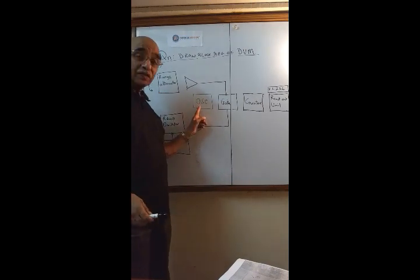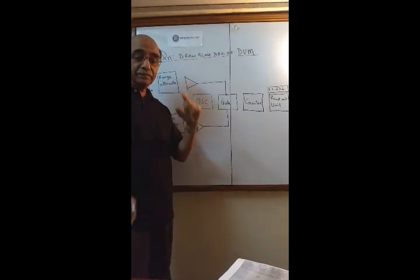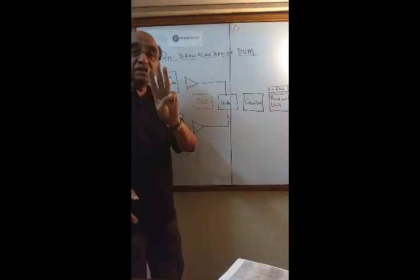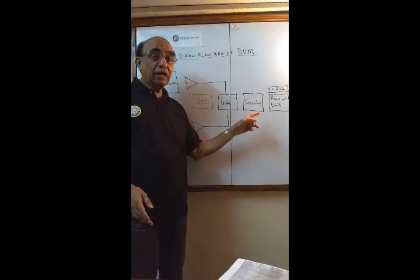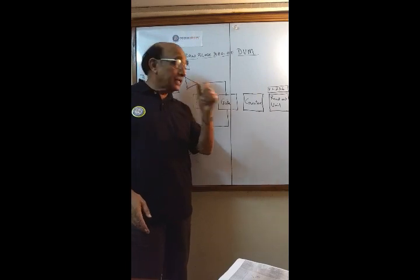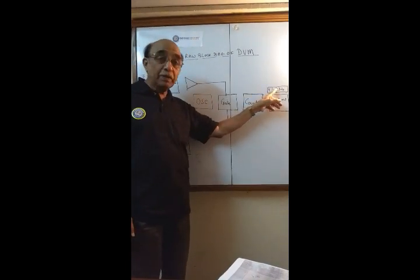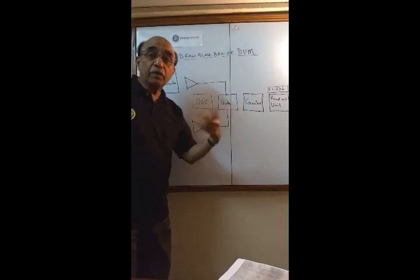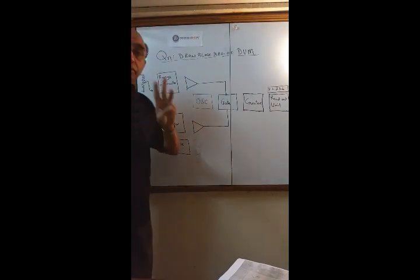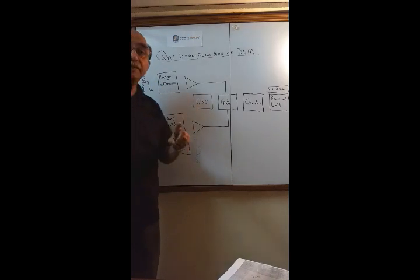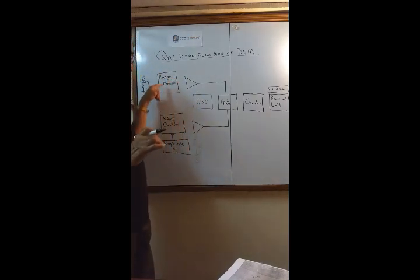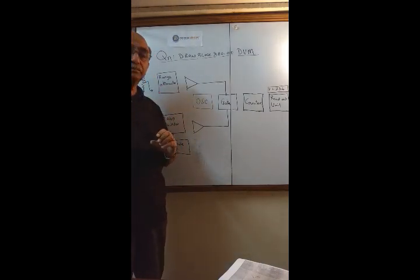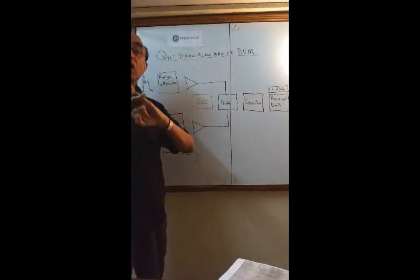First one is oscillator. Second, it is the gate. Third, it is the counter. And fourth, it is the reading unit. This is the display. Then you draw two boxes here. One is the attenuator, and second, it is the ramp oscillator.